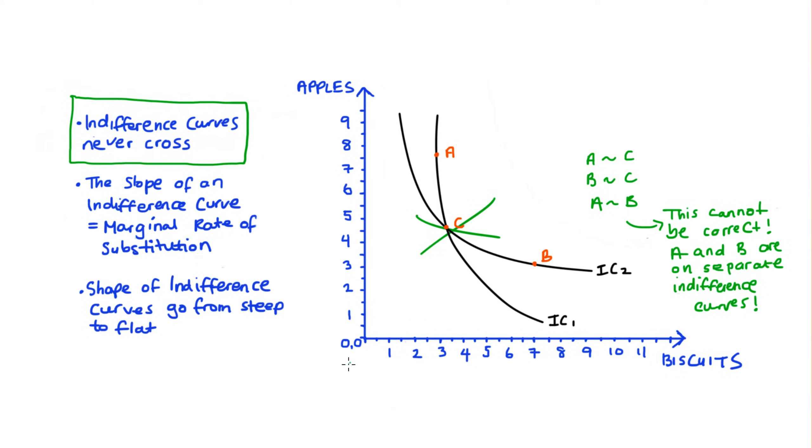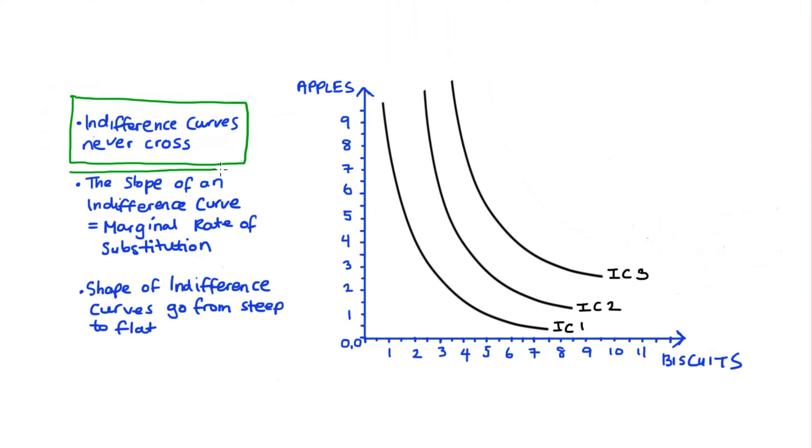The second feature I wanted to talk about is the meaning of the slope of our indifference curves, which is called the marginal rate of substitution. Now hopefully you recall that we calculate a slope by taking rise over run, which is the change in the vertical axis variable divided by a change in the horizontal axis variable.